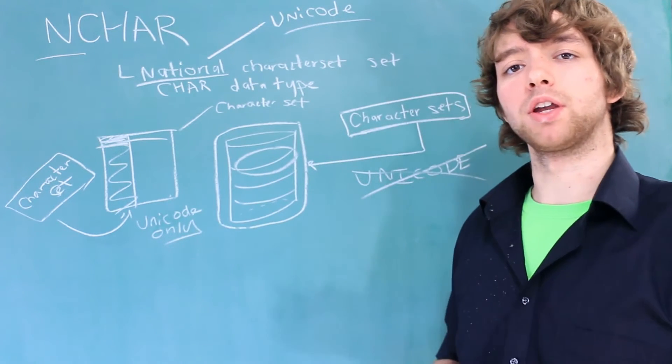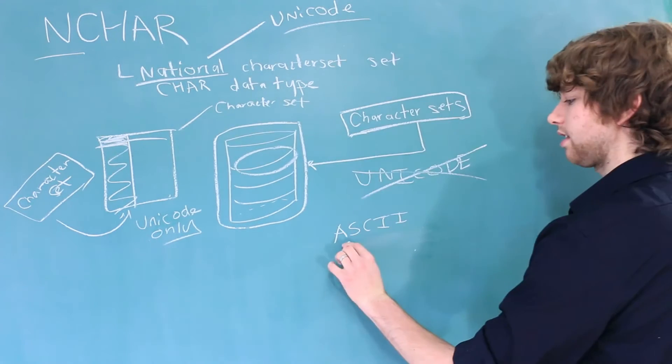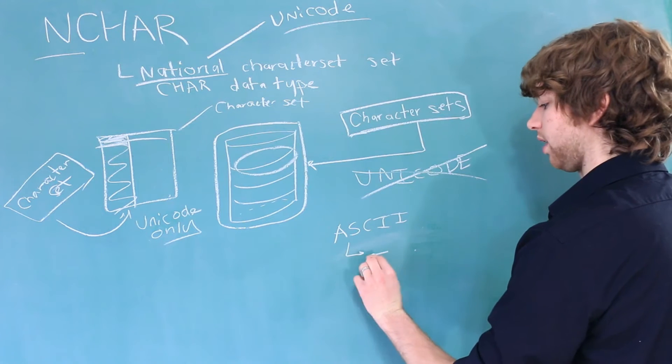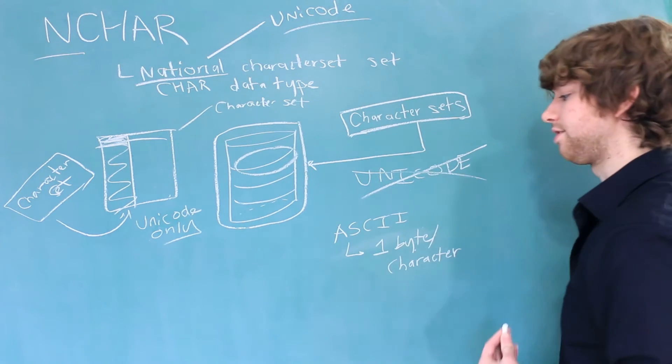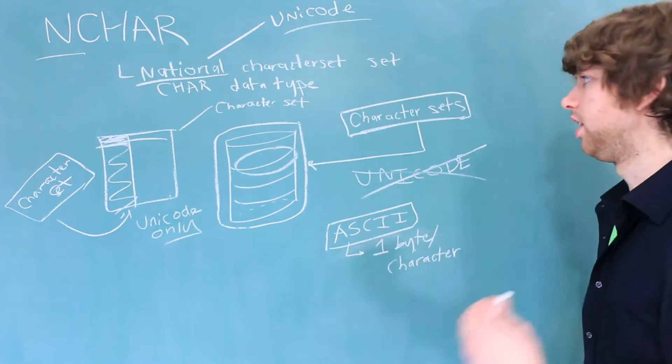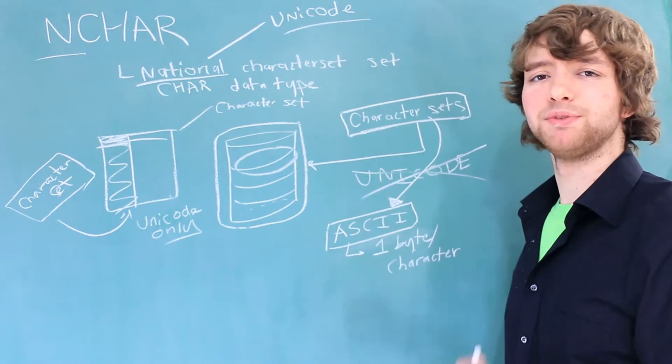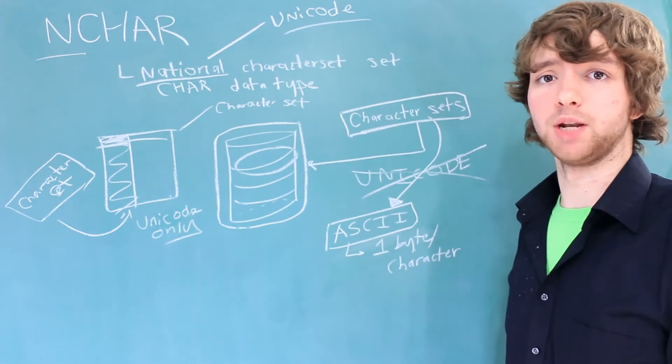Well let's say we are working with a database that we know is going to work with applications that use ASCII. ASCII is a character set that uses one byte per character. It might be easier for us if everything uses ASCII, including the database. So we might set the database character set to ASCII. But what happens if it comes up where we actually want to store Unicode in our database?